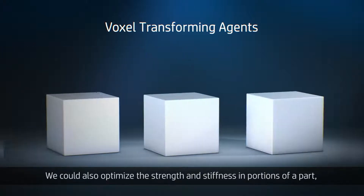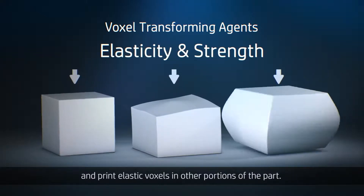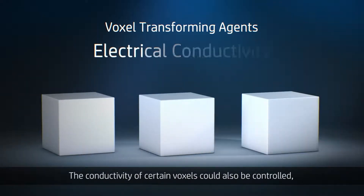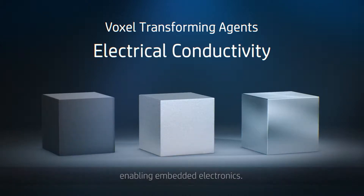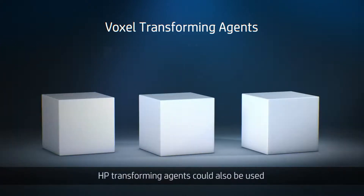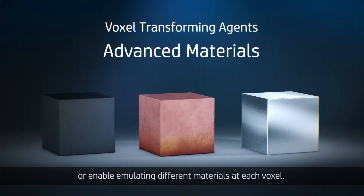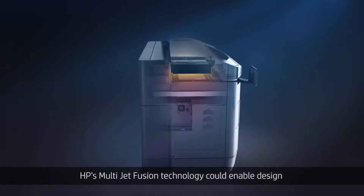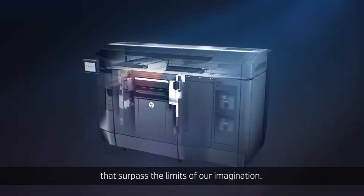We could also optimize the strength and stiffness in portions of a part, and print elastic voxels in other portions of the part. The conductivity of certain voxels could also be controlled, enabling embedded electronics. HP transforming agents could also be used to enable the printing of new advanced materials, or enable emulating different materials at each voxel. HP's Multi-Jet Fusion technology could enable design and manufacturing possibilities that surpass the limits of our imagination.